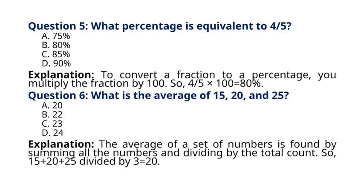Question 6. What is the average of 15, 20, and 25? A. 20, B. 22, C. 23, D. 24. Explanation: The average of a set of numbers is found by summing all the numbers and dividing by the total count. So, 15 plus 20 plus 25 divided by 3 is equal to 20. So the correct answer to question 6 is option A. 20.